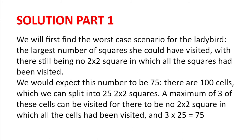We would expect this number to be 75. There are 100 cells, which we can split into 25 2x2 squares. A maximum of 3 of these cells can be visited in each 2x2 square for there to be no 2x2 square in which all the cells have been visited, and 3 multiplied by 25 is 75.